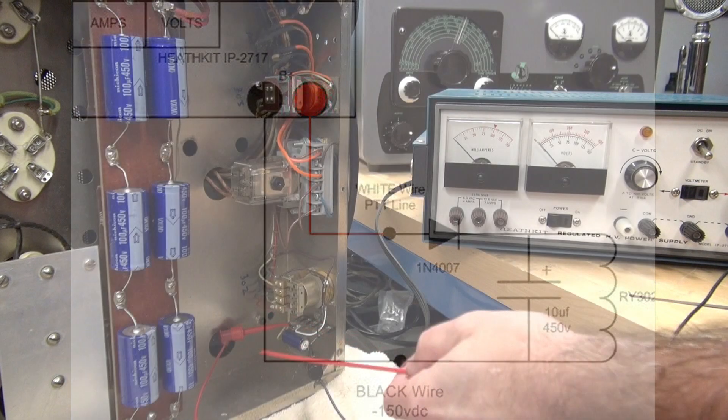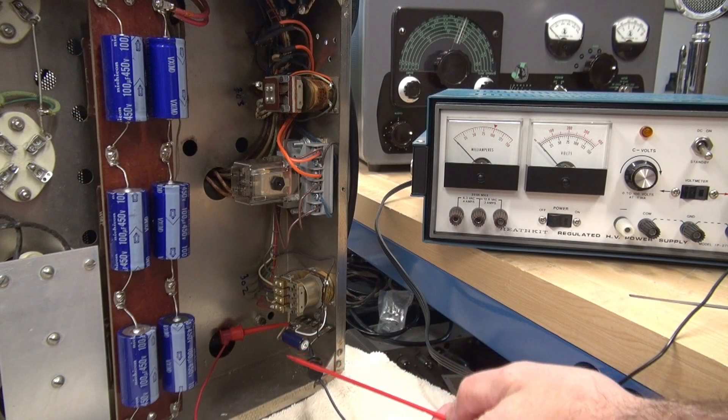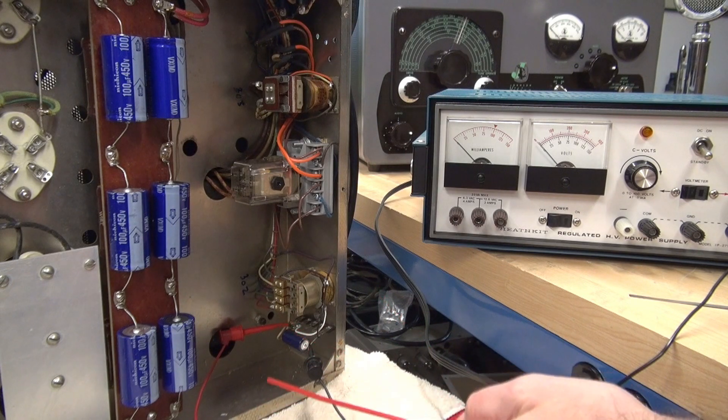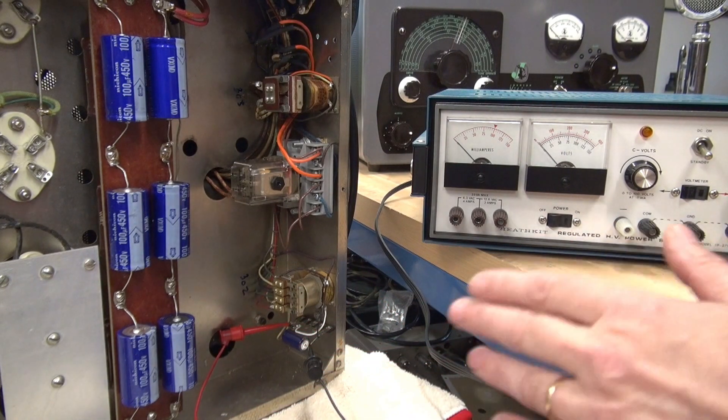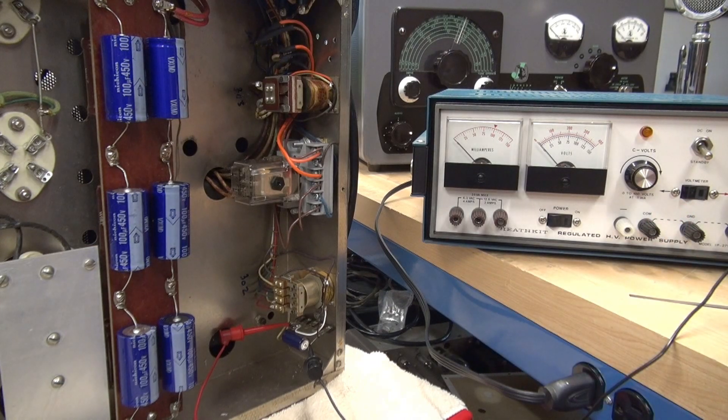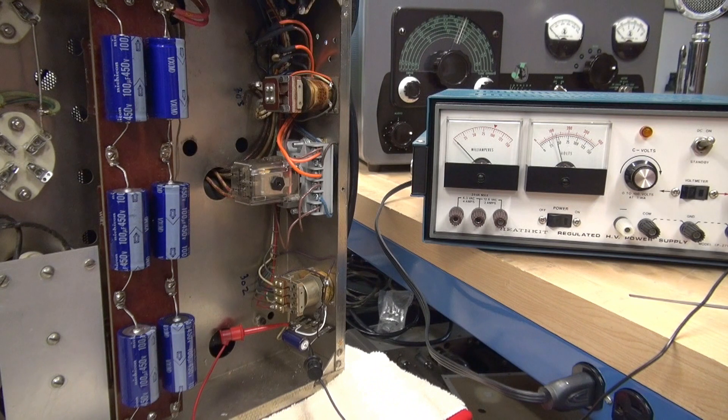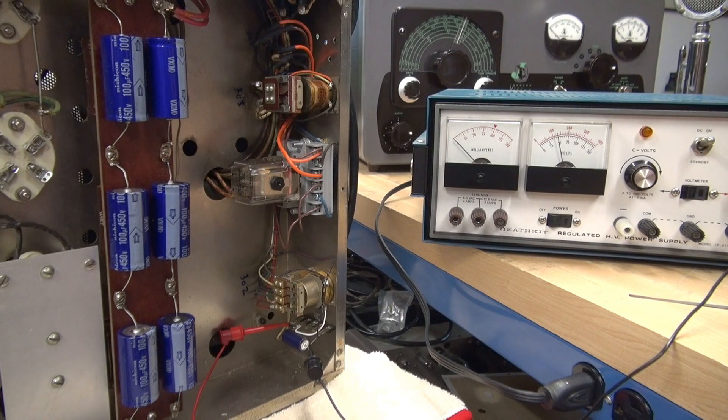Make sure you get this polarity correct, because if you reverse it, you're going to have a big surprise when that cap lets loose. All right, so double-check that. Next thing, you see I got my positive lead off at this time. I'm going to turn on your high voltage power supply, and I'm choosing about 125 volts to test the relays with.